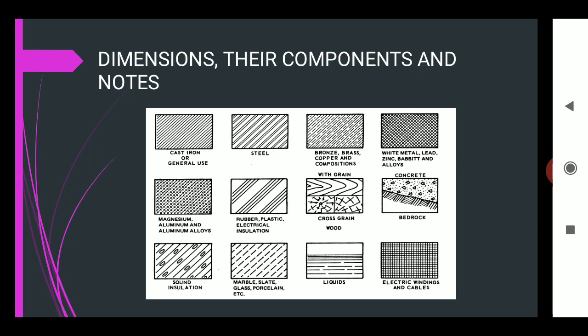The examples for the different types of dimensions are listed below. The cast iron for general use, steel, bronze and brasses, white metal leads, and cross grain bedrock sections are expressed in the given picture.